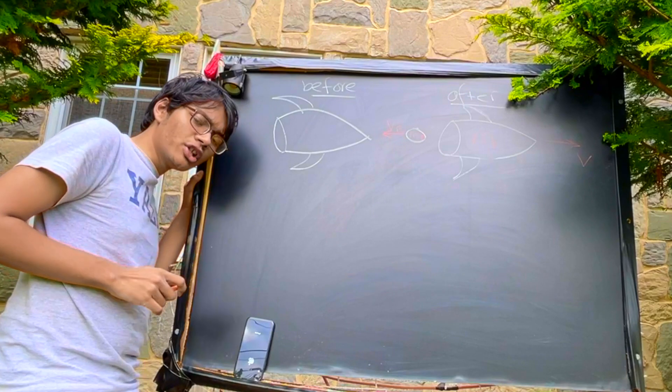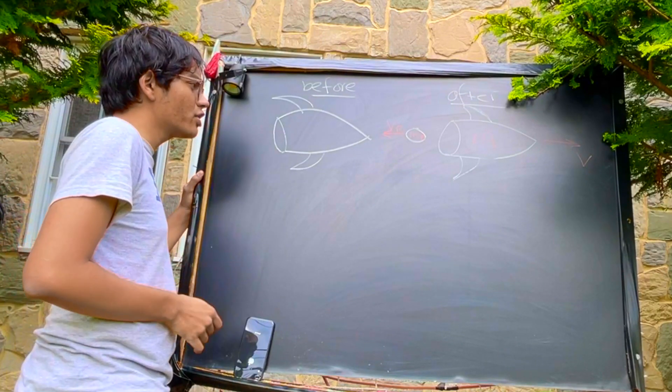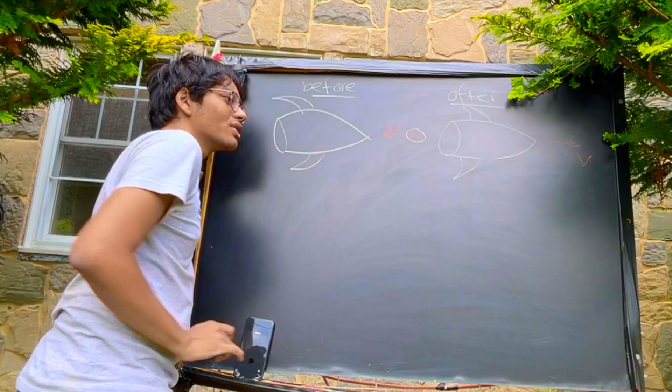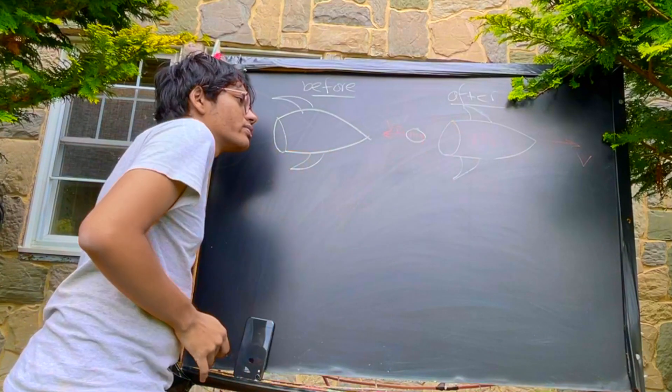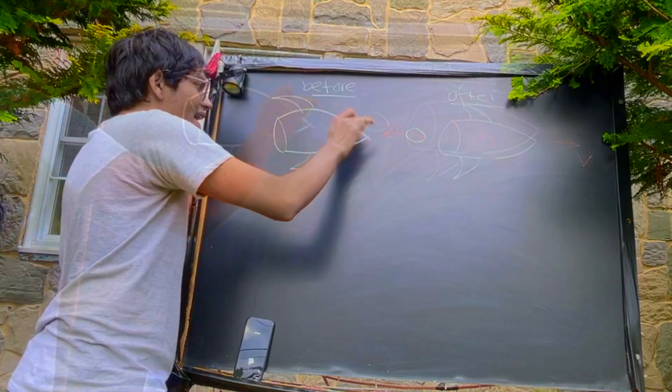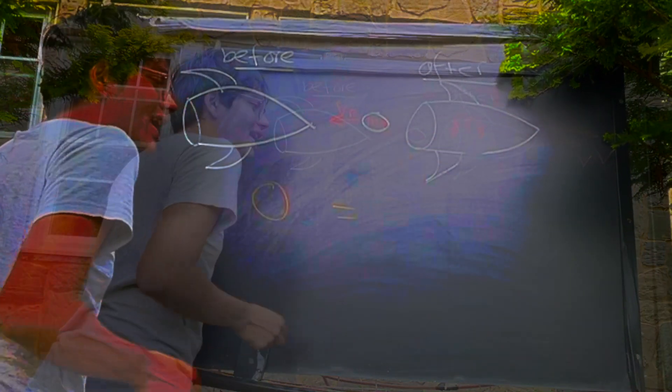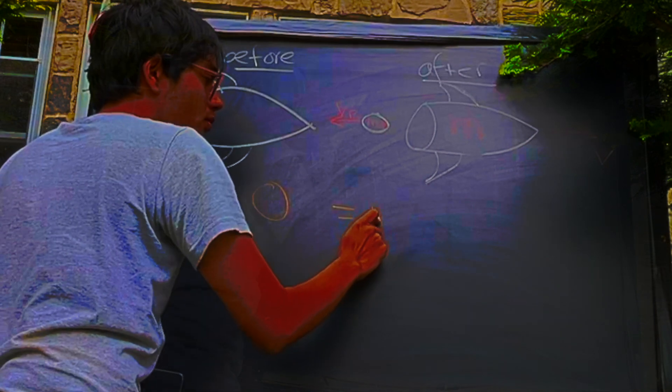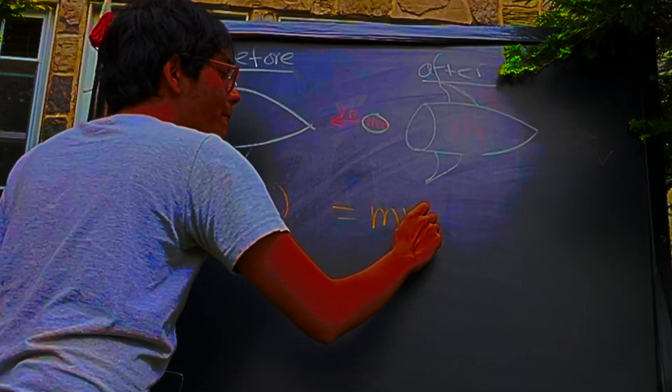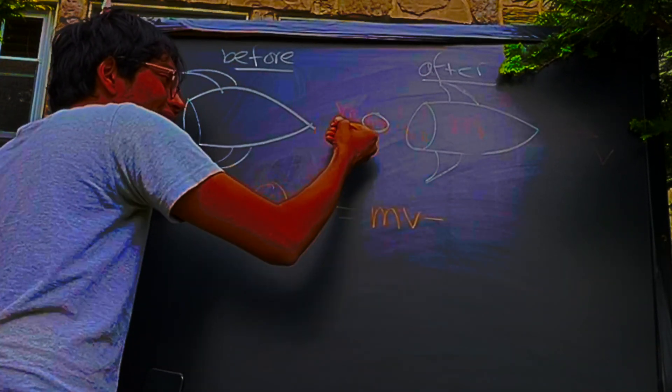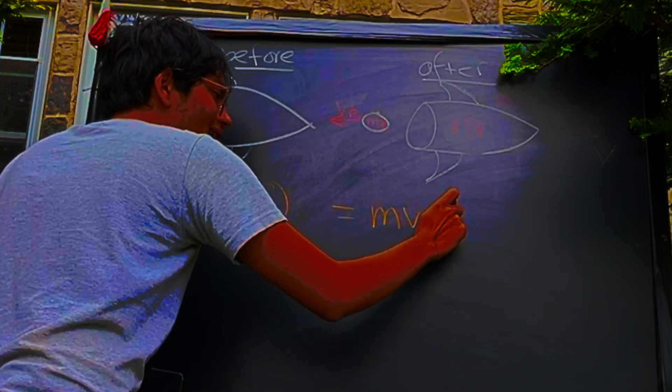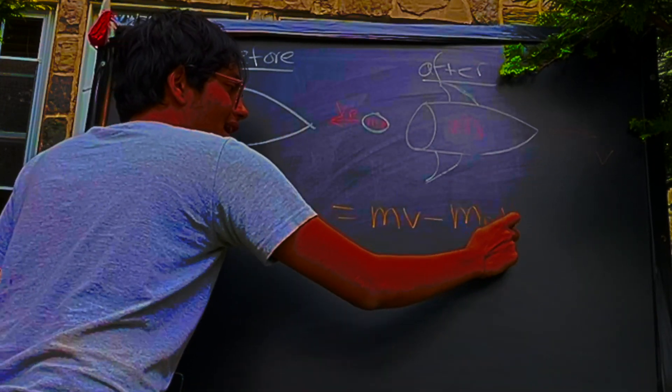And so what does conservation of momentum tell us? Well, conservation of momentum says before equals after. Momentum before equals momentum after. That means we can say if the rocket is at rest before, its momentum is zero. And if it's moving with some velocity v after, we can say its total momentum after is mv minus, since the propellant is in the opposite direction, minus the mass of the propellant times its velocity.